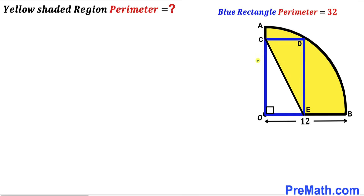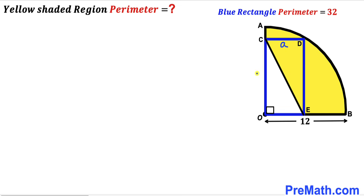Let's go ahead and get started. Let's focus on this blue rectangle OCDE and label its sides. I'm going to call one side lowercase a, the adjacent side lowercase b, and the opposite sides are likewise lowercase a and lowercase b.